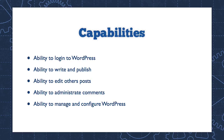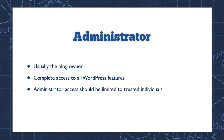Each user role has a group of capabilities assigned to it. Capabilities are basically permissions to do specific things in WordPress — it may be the ability to write a post and publish a post, or the ability to edit other people's posts as well as your own posts. There are hundreds of capabilities that can be assigned to different user roles. In this video, you'll get a sense of which capabilities correspond with each of the five user roles, starting with the most permissive and working down to the least permissive, which is subscriber.